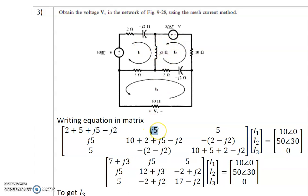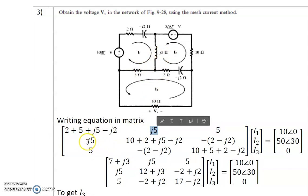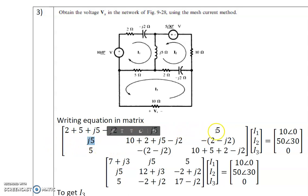If current directions were opposite, the mutual impedance would be negative. Z21 = Z12 = j5, and Z13 = Z31. The self impedance Z22 is the sum of impedances in loop 2: 2 + 10 = 12, plus j5 minus j2 = j3, giving Z22 = 12 minus j3. The branch 2 minus j2 is common between loops 2 and 3, but since I2 and I3 flow in opposite directions, the mutual impedance Z23 = minus(2 minus j2).